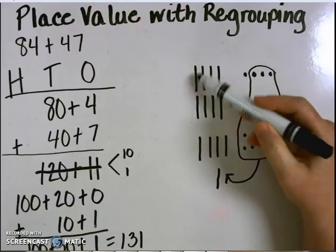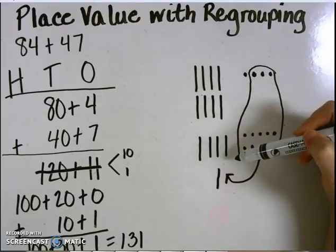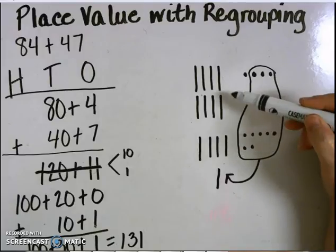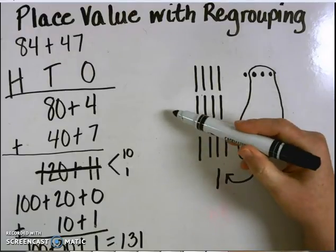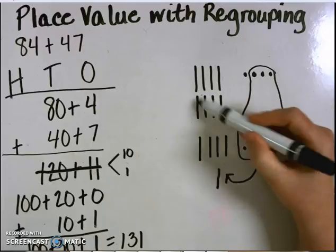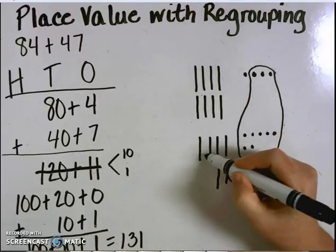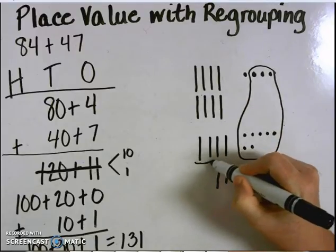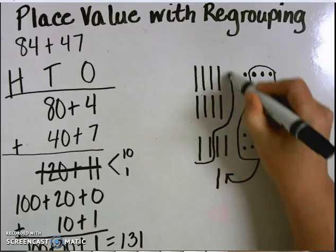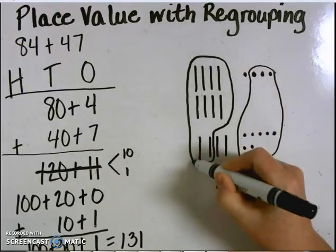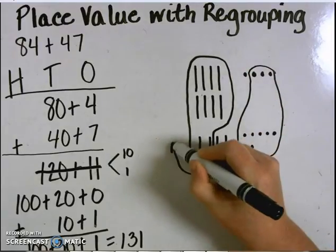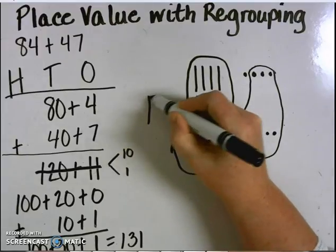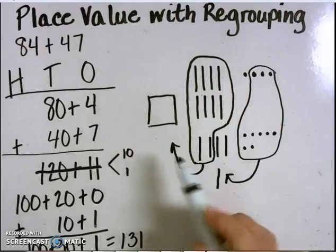I also notice that all of these 10s, there are more than 10 10s. So that's going to give me a 100. I have eight 10s here. I'm going to use two of these 10s from the 40 or the four 10s to combine with the eight 10s to make one group of 100.